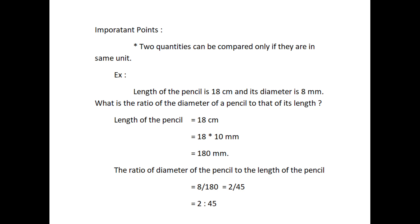There are two important points. First, two quantities can be compared only if they are in same unit. For example, the length of a pencil is 18 cm and its diameter is 8 mm. What is the ratio of the diameter of the pencil to that of its length? In this example, the length and the diameter of the pencil are given in different units.